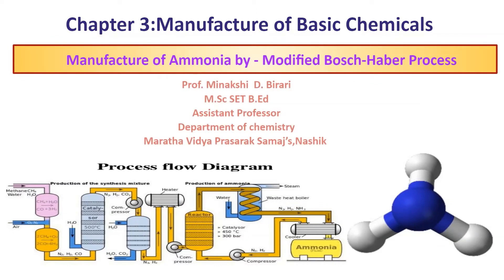Hello everyone, this is Meenakshi Dilip Birari, working as Assistant Professor in Chemistry at Maratha Vidya Prasarak Samaha Nasik. We know that ammonia, sulfuric acid and nitric acid are some basic chemicals which are used directly or indirectly as fertilizers or as intermediates for the preparation of other chemicals. Ammonia is a basic chemical required to produce nitrogen-containing derivatives. It is also used in the manufacture of fertilizers, explosives and pharmaceuticals. Today I am going to talk about the manufacture of ammonia by modified Bosch-Haber process.